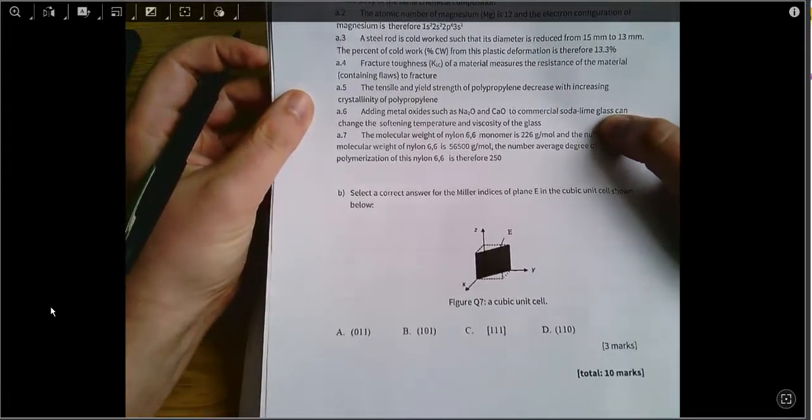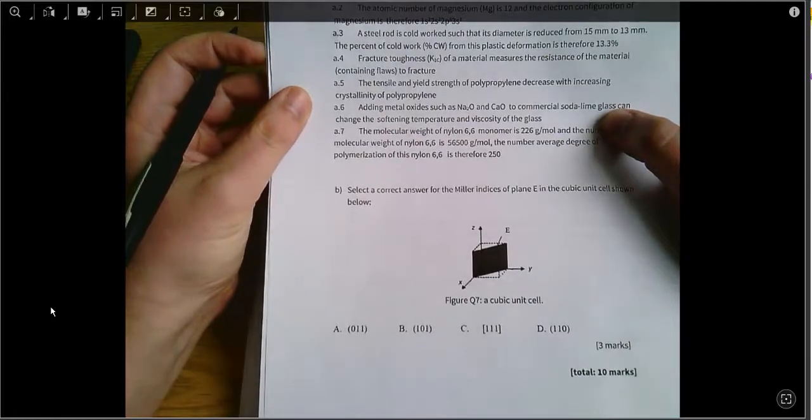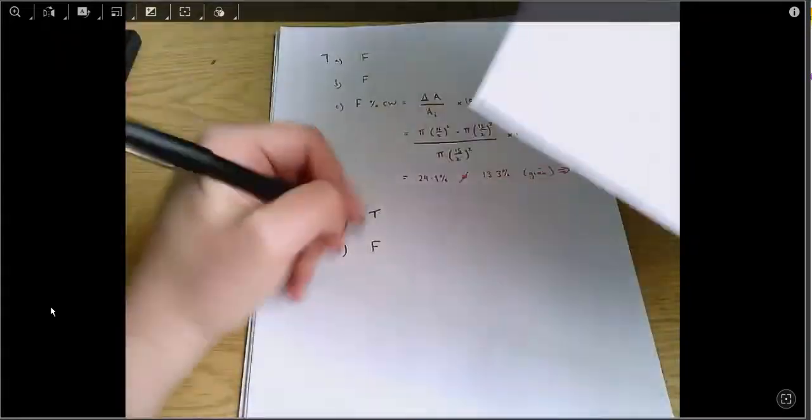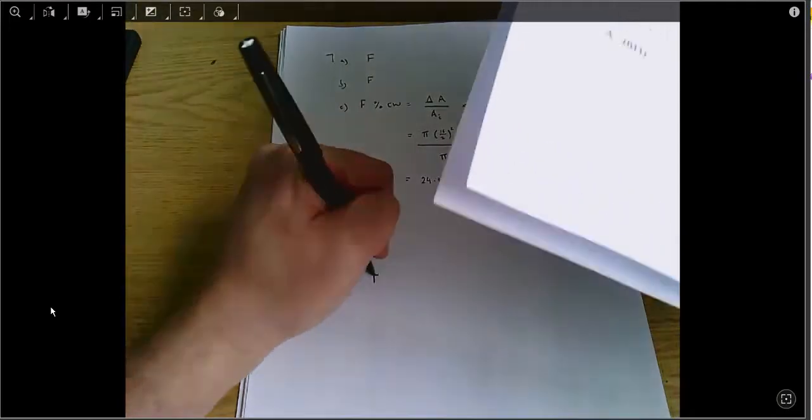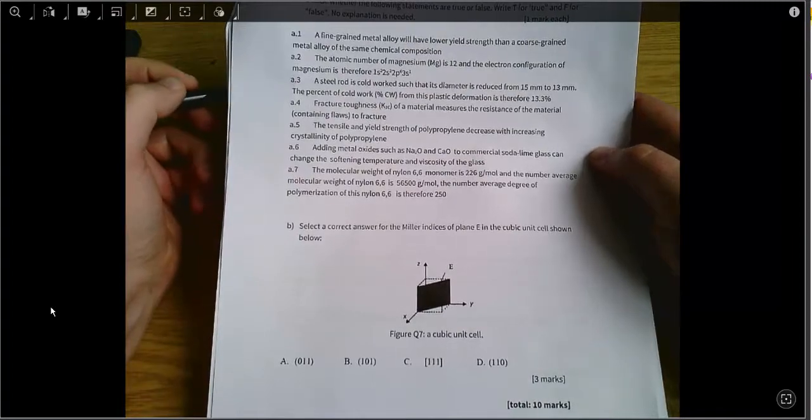A6, adding metal oxides such as sodium oxide and calcium oxide to commercial soda lime glass can change the softening temperature and viscosity of the glass. That's just true, that's straight out of the lecture notes. And finally the molecular weight of nylon 66 is 226.